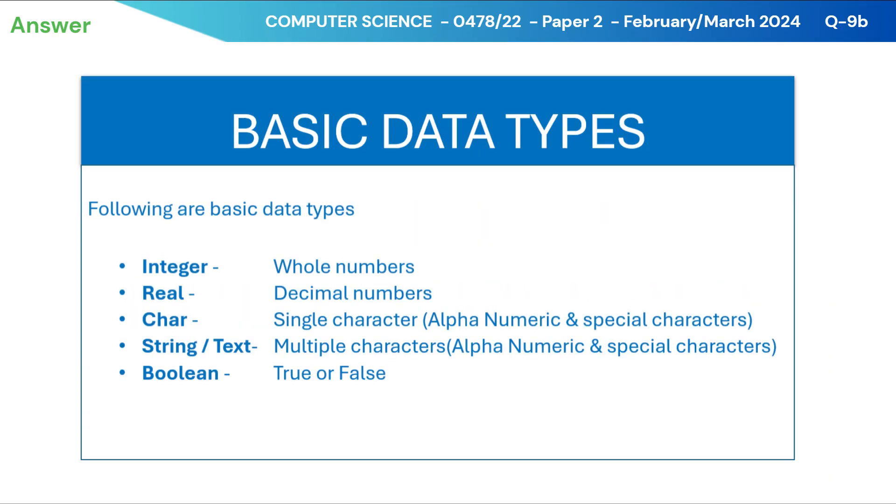The following are basic data types. Integer, it stores whole numbers. Real, it stores decimal numbers. Char, it stores single character, alphanumeric, and special characters. String or text, it stores multiple characters, alphanumeric, and special characters. Boolean, it stores true or false.